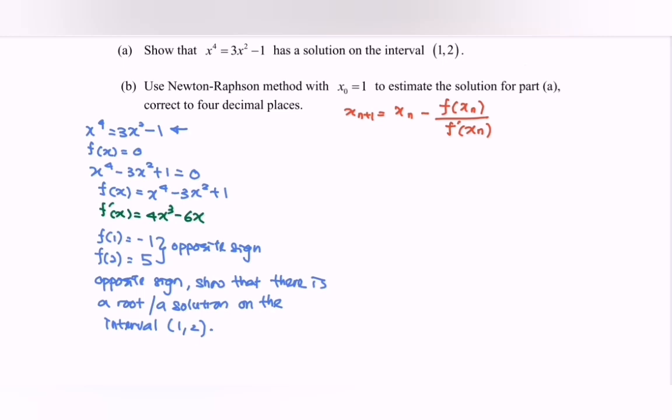Starting with x₀, we have x₁ equals 1 minus [1 to the power of 4 minus 3(1) squared plus 1] over [4(1) cubed minus 6(1)]. So x₁ equals 0.5.